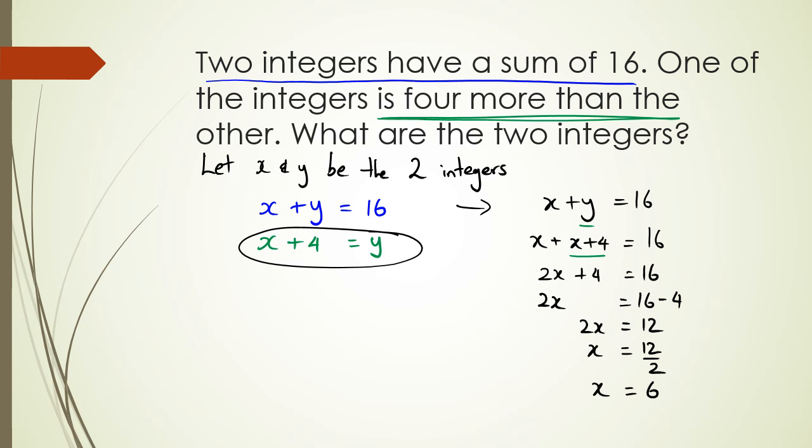And to figure out y, because from here I said y is equal to x plus four. And because x is equal to six, I could say six plus four is what y is. So therefore, y is equal to 10. So my two answers that I get in this case, the two integers are six and 10.